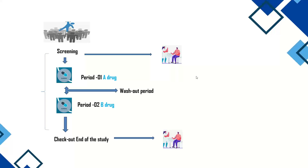From this information we can map the core SDTM LB domain variables. STUDYID identifies the study, USUBJID identifies each subject, and DOMAIN is 'LB'. The visits — screening, Period 1, Period 2, and end of study — are mapped to VISIT and VISITNUM. EPOCH captures the state of the subject when the sample was collected: screening, treatment, or follow-up.